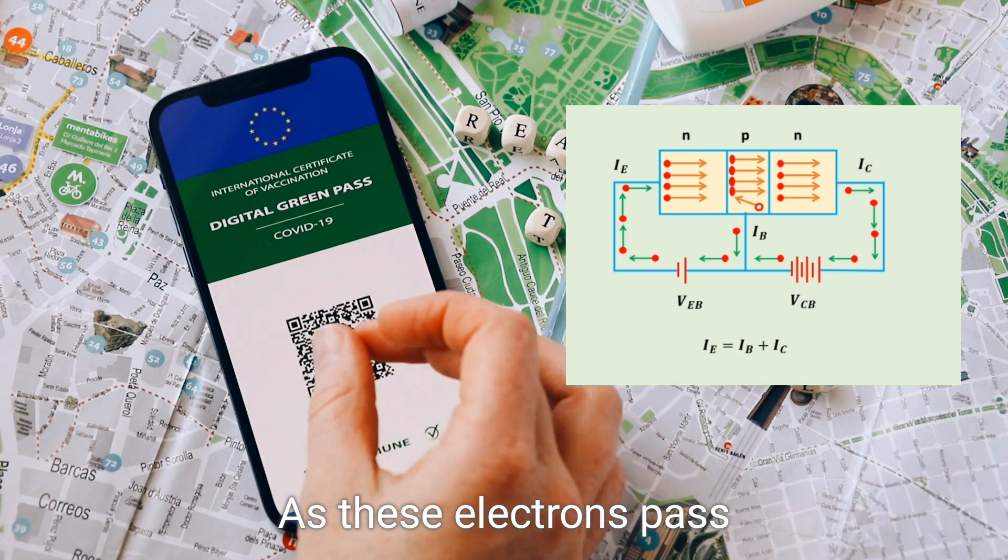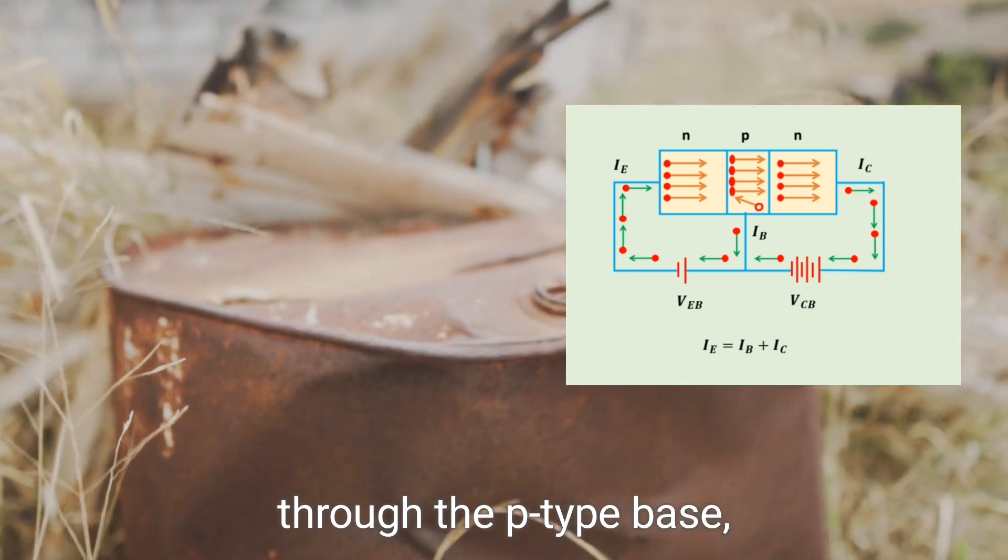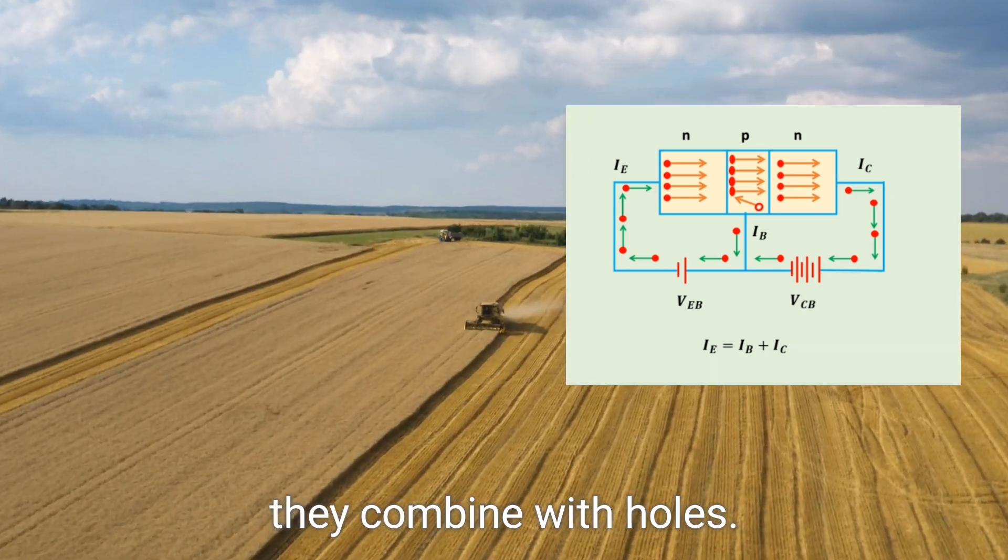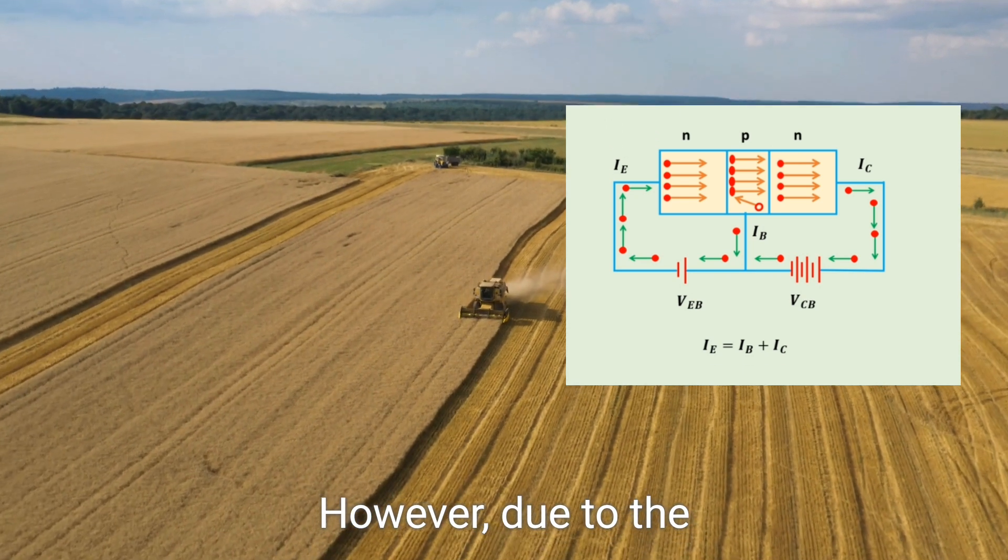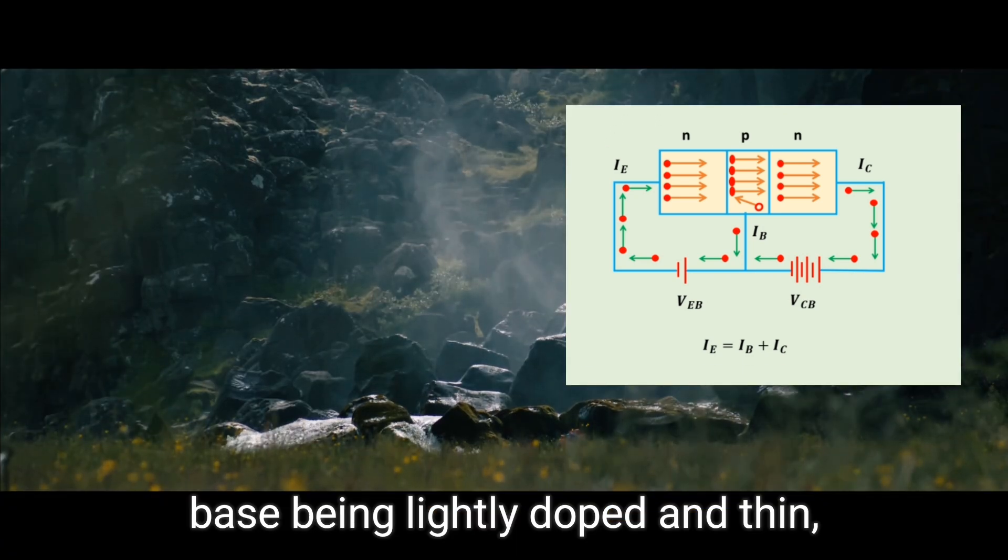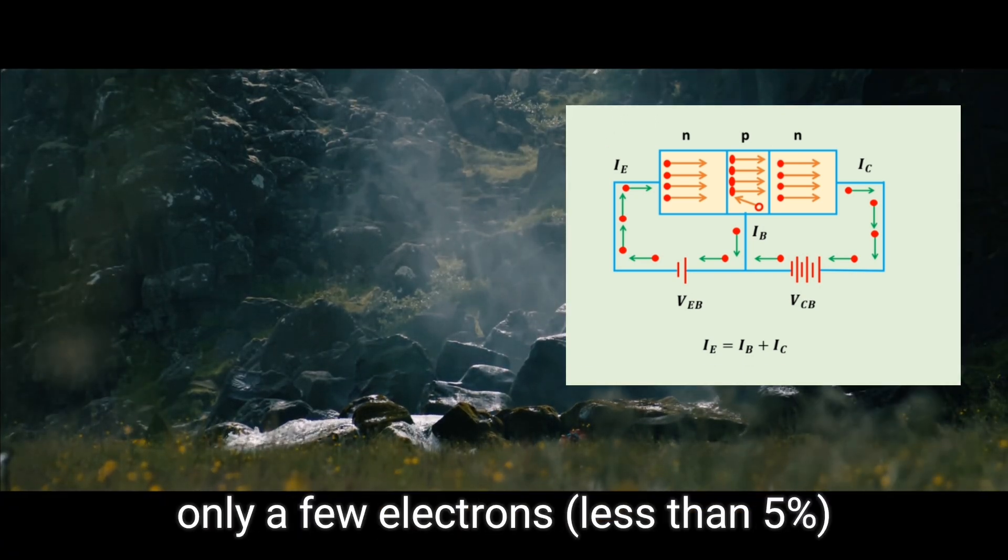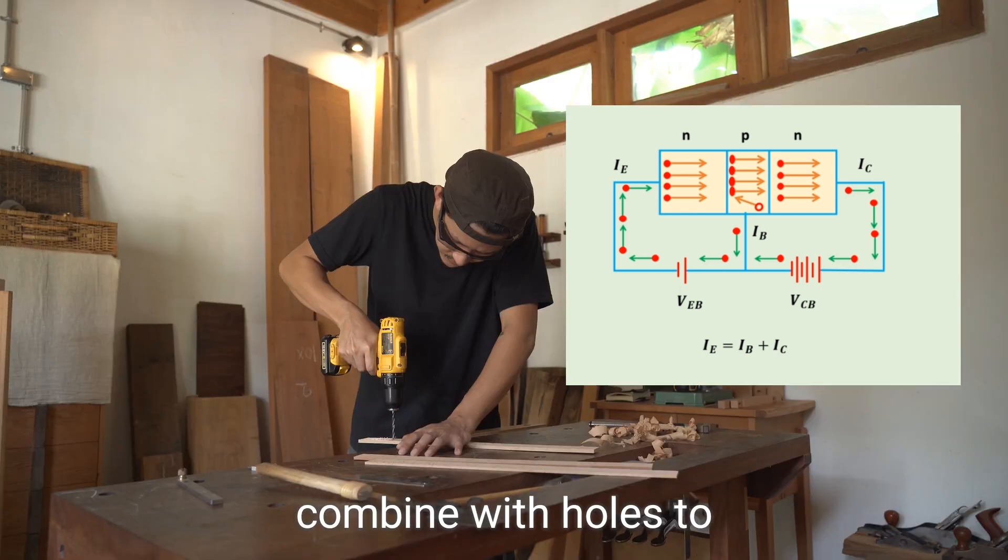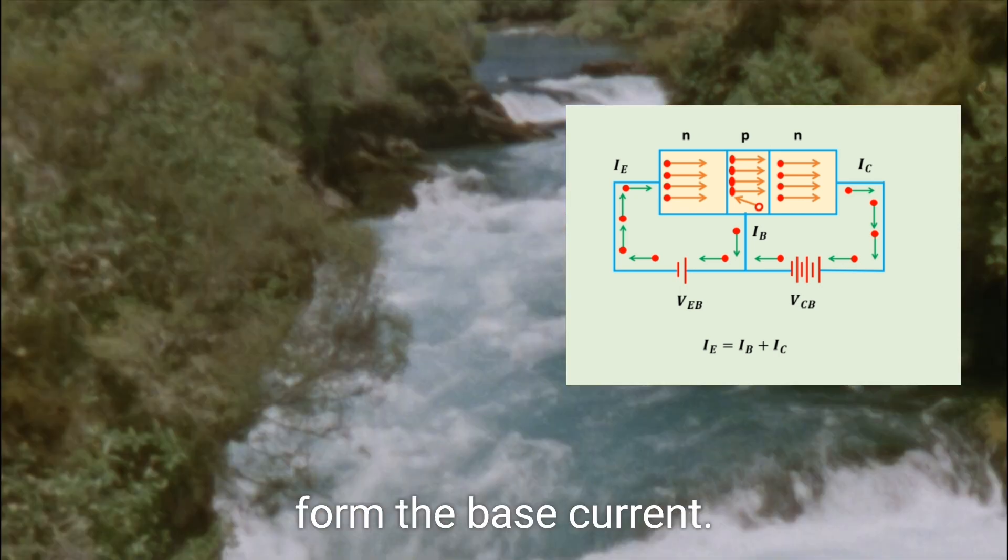As these electrons pass through the P-type base, they combine with holes. However, due to the base being lightly doped and thin, only a few electrons, less than 5%, combine with holes to form the base current.